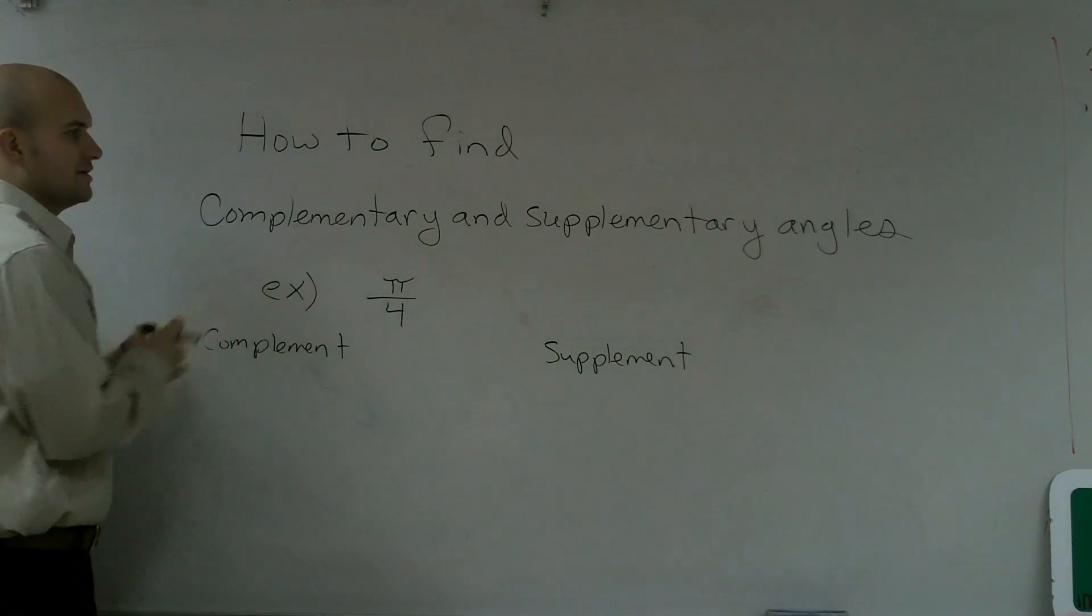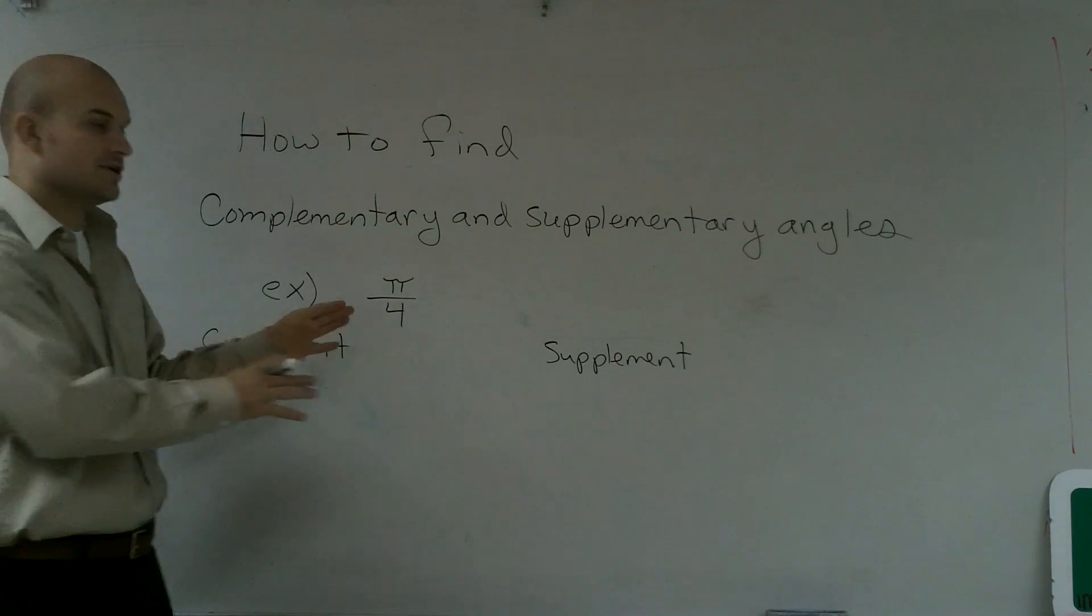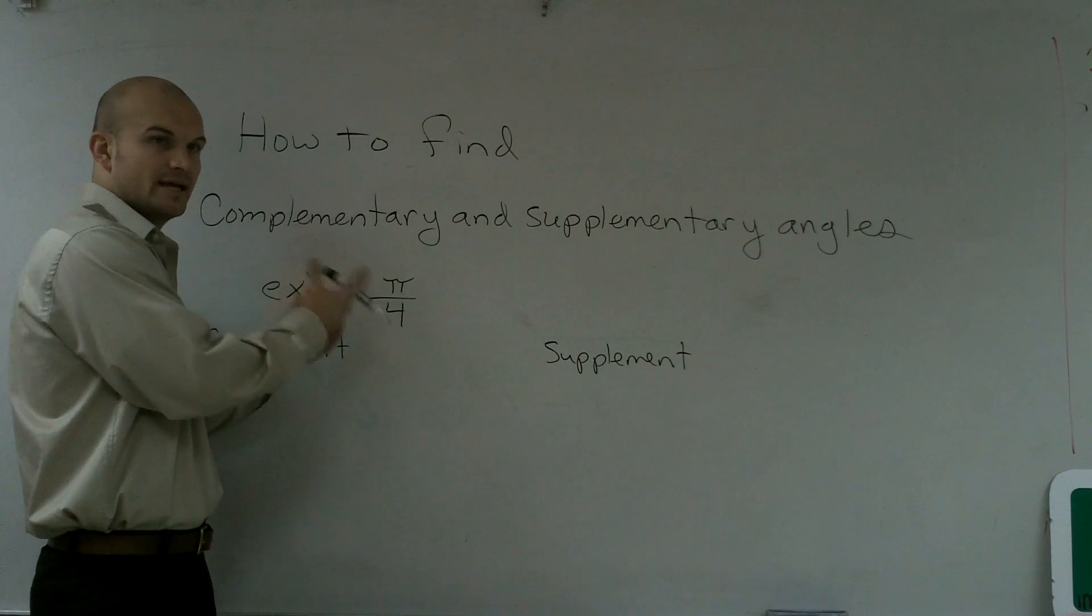All right, what I'd like to do is show you guys how to find the complementary and supplementary angles when you're given an angle as a radian.